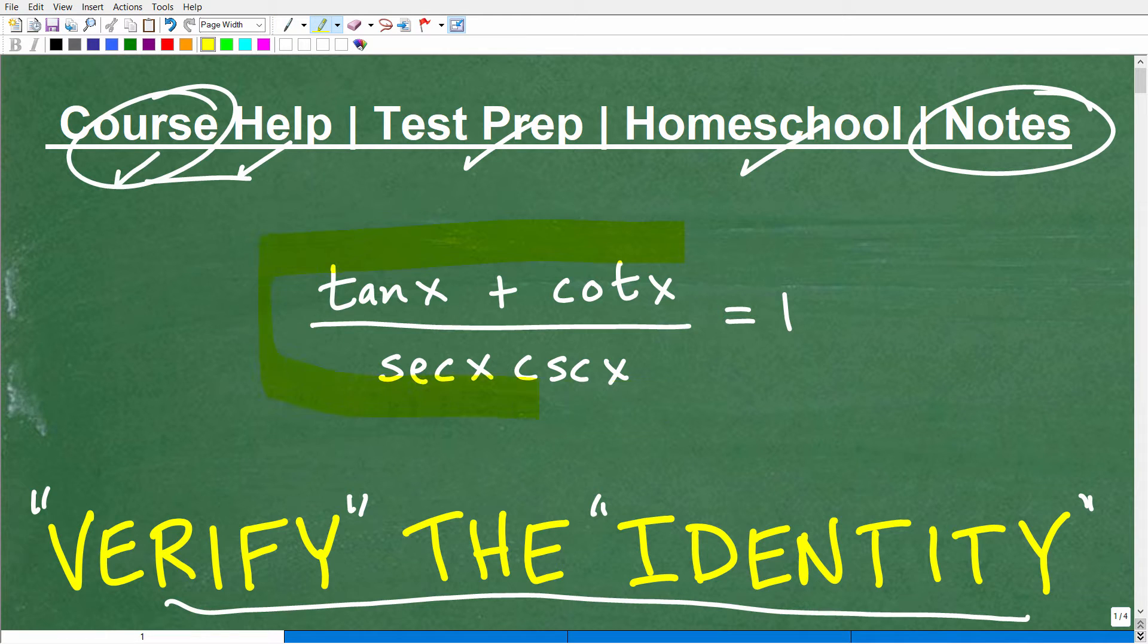But let's go ahead and get into this problem. Again, what we want to do when we're verifying identity is work on this left-hand side here until we get to a 1. Now, what are some of the things that when you're looking at an identity that you want to think of?